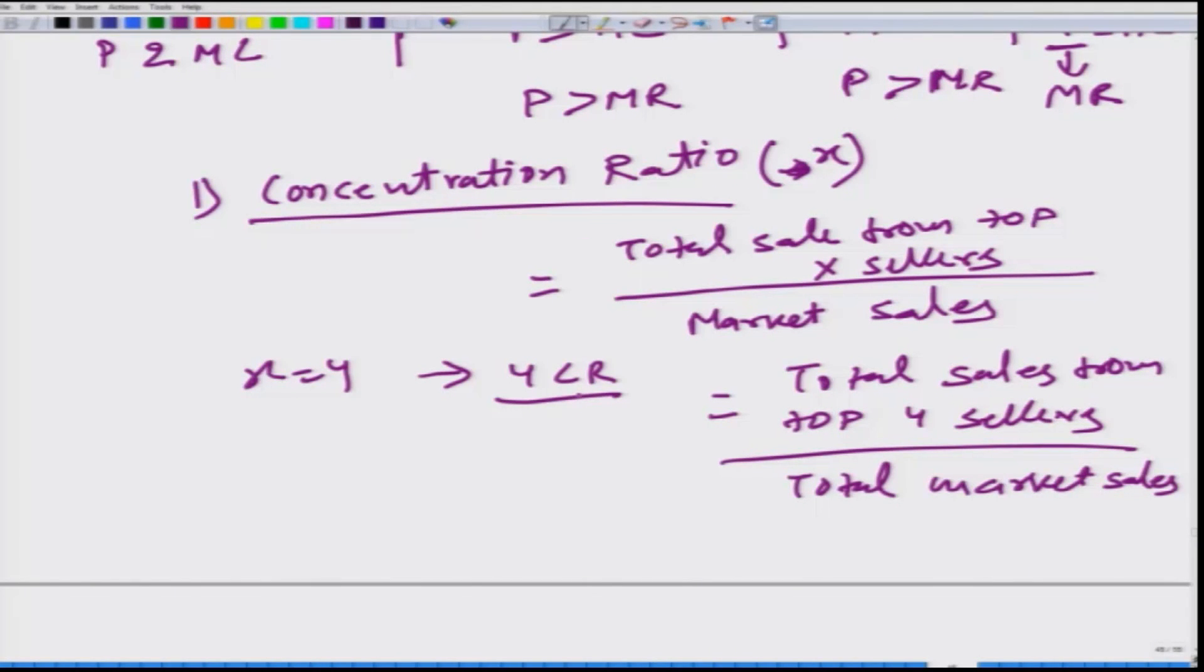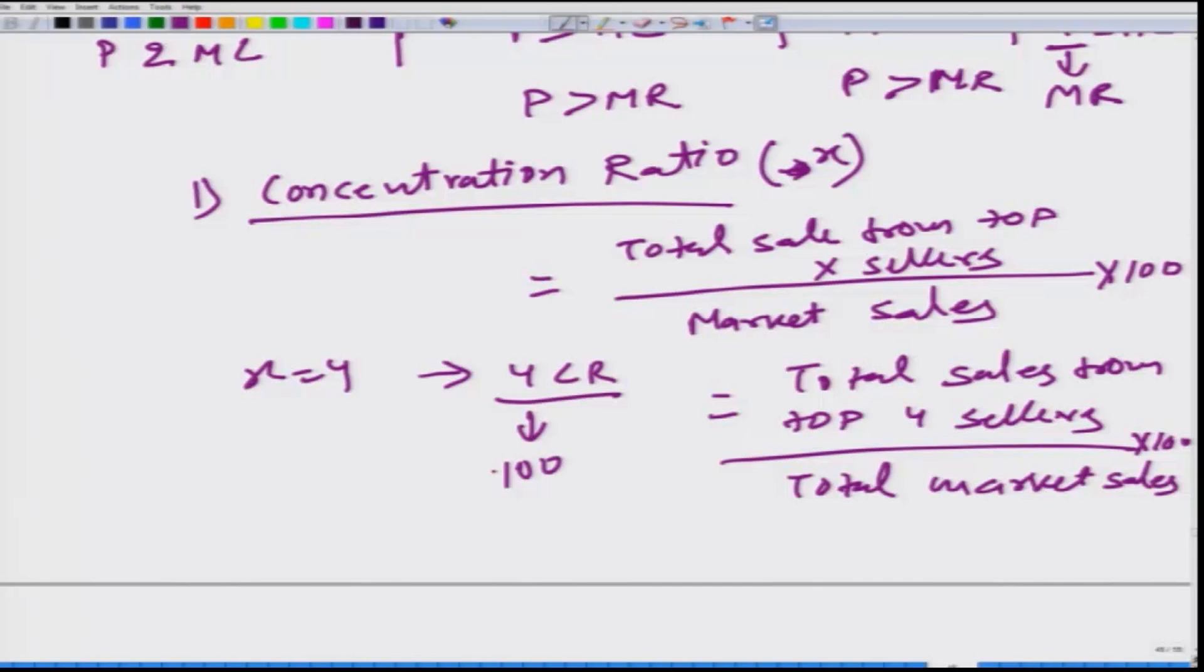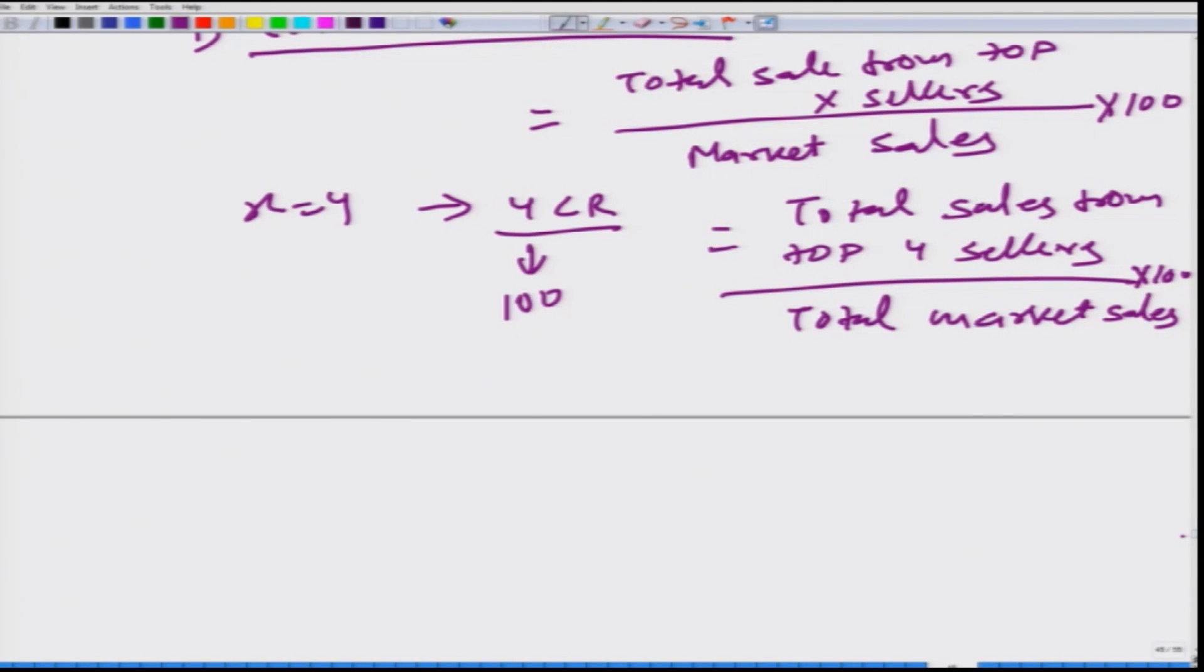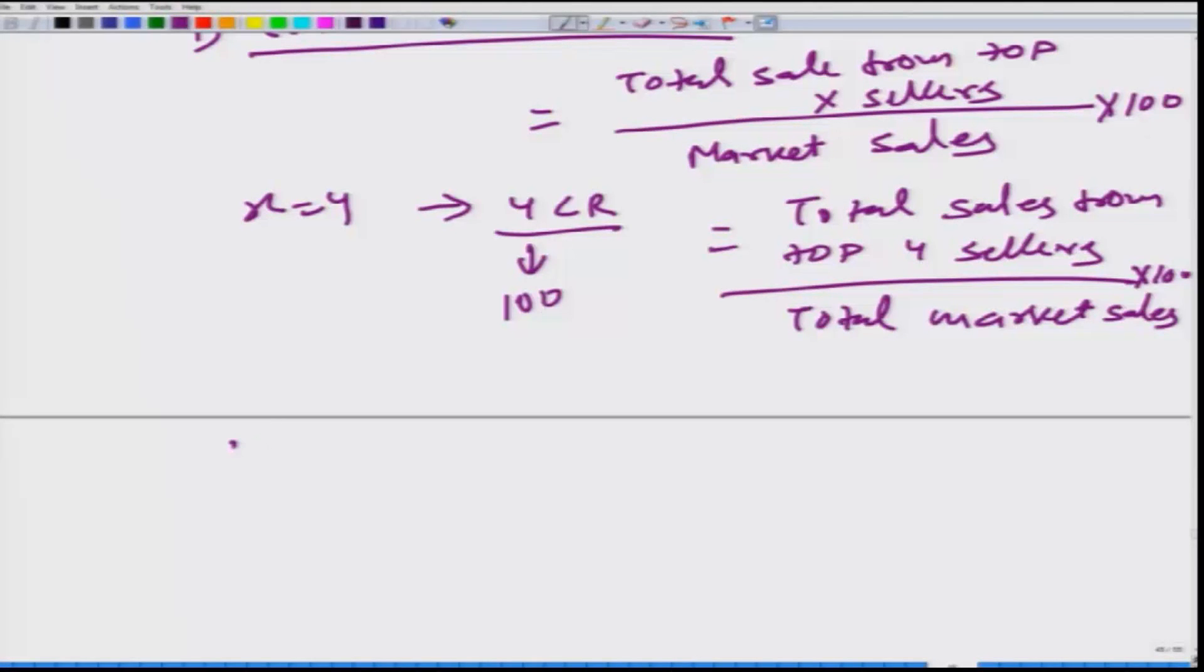Let us say what would be the value of 4CR if we have monopoly. There is a firm which is the only firm supplying in the market, so 100 you know we will get. And of course, here if we multiply it, we will get in terms of percentage. If we do not multiply it, we will get in terms of fraction. So in case of monopoly, the 4CR is going to be 100 percent. And in case of perfectly competitive market, all firms are tiny in comparison to the whole market. So the value is going to be much lower. This is one way of figuring out which market environment that we are in.